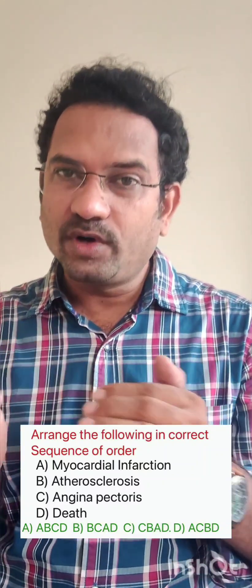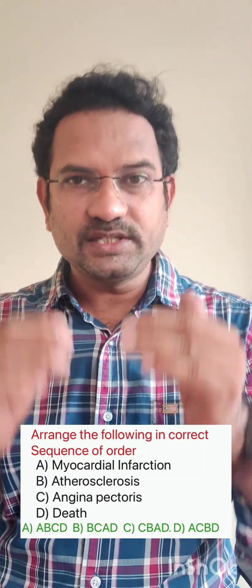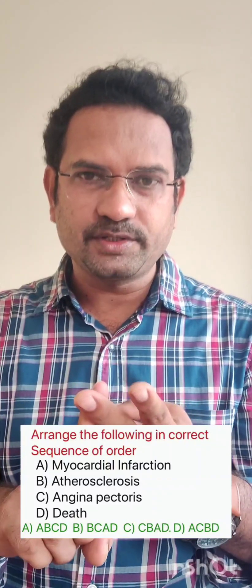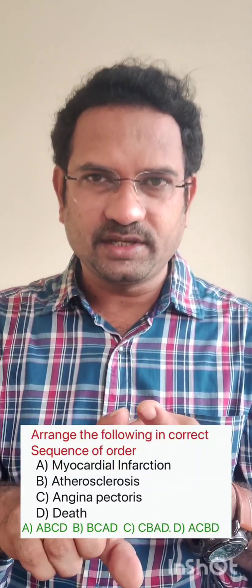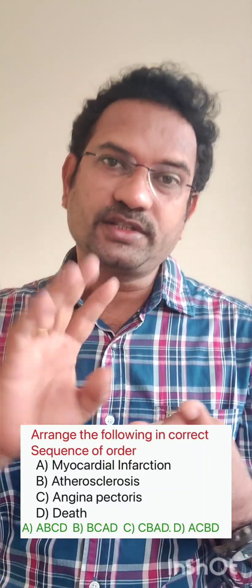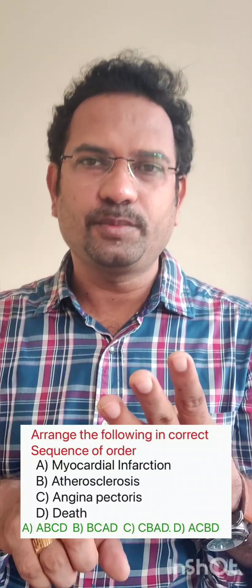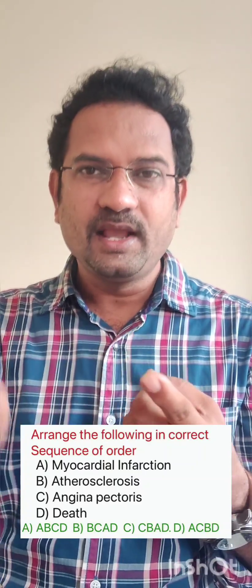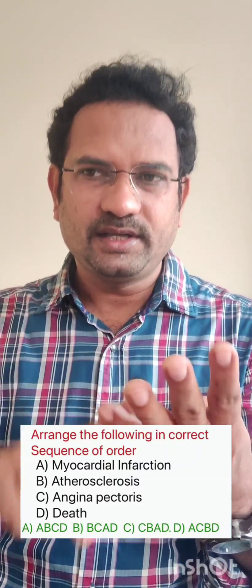Myocardial infarction means death of myocardial cells, and finally death of the human being. So the sequence starts with atherosclerosis, then angina pectoris, then myocardial infarction, and then death. Stable angina is caused by lipid accumulation causing pain; unstable angina involves platelet accumulation causing 100% blockage, resulting in myocardial infarction and finally death.